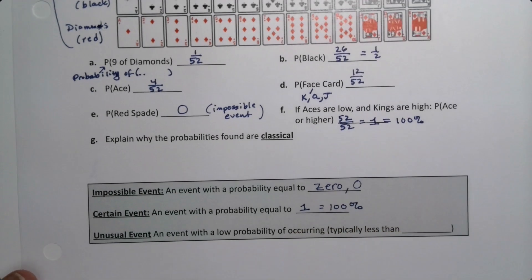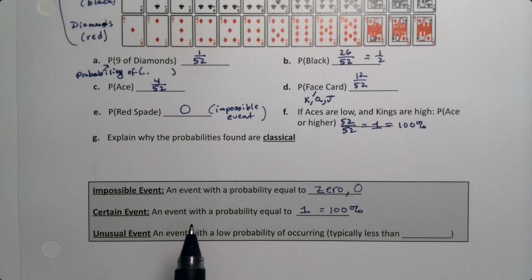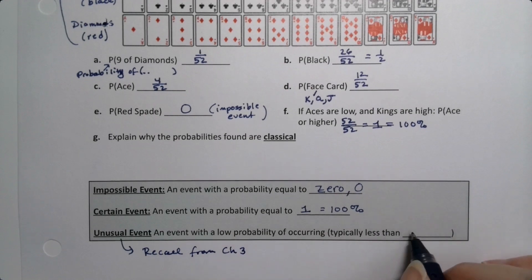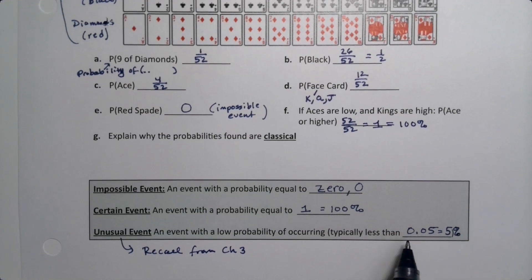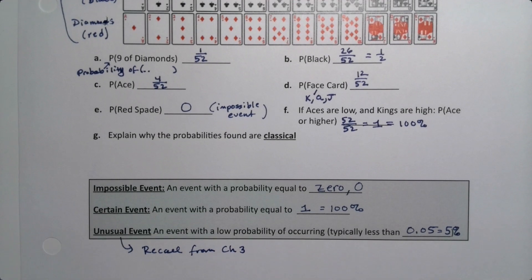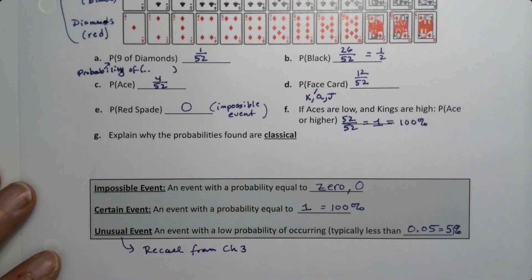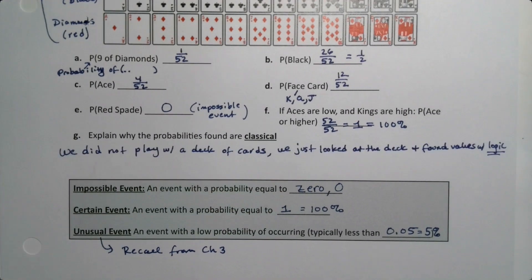Now, if aces are low and kings are high, the probability of pulling an ace card or higher would be all 52 cards, which is one, which is 100%. Which is a certain event. An event that's definitely going to happen has a probability equal to 1, or 100%. An unusual event we learned in chapter 3. Unusual events are events that have a probability less than 0.05, which is 5%. Now, all these probabilities are classical because I didn't actually grab a deck of cards and draw. We didn't play with them, we just used logic.